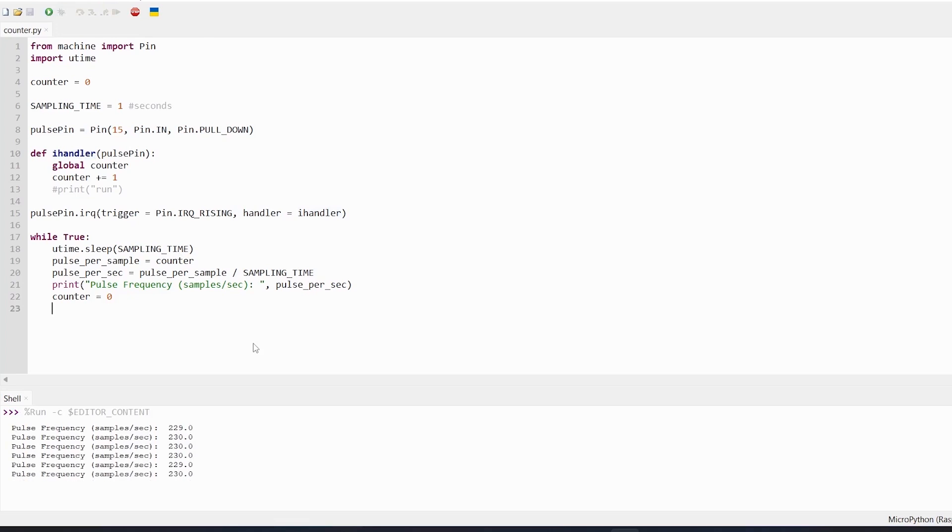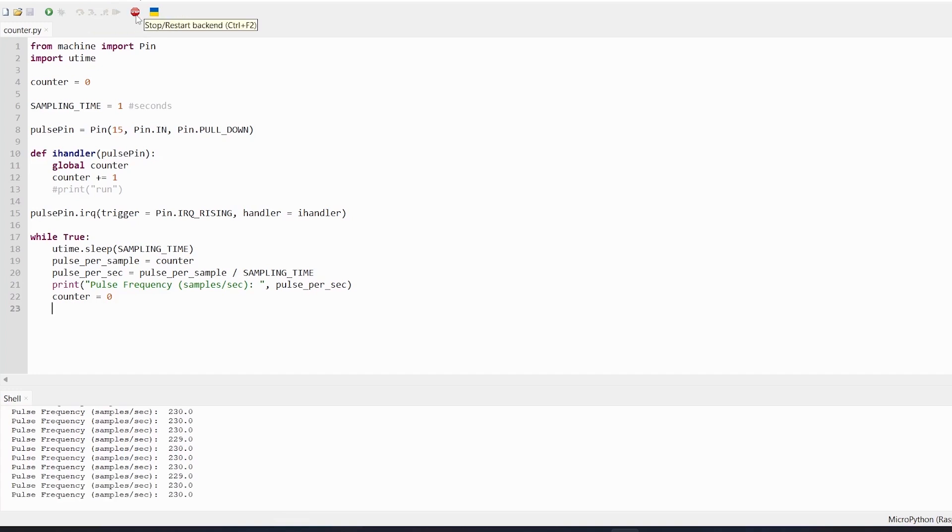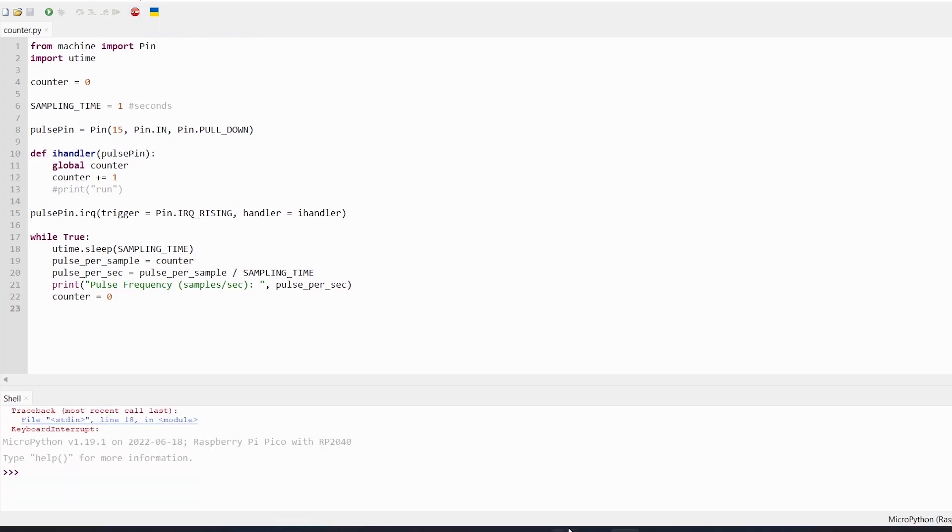When I run this code, I see number of rising edges counted by the interrupt handler in a second which is my waiting period. I still need to calibrate this number to show accurate capacitance values on display.